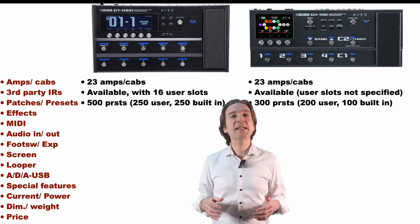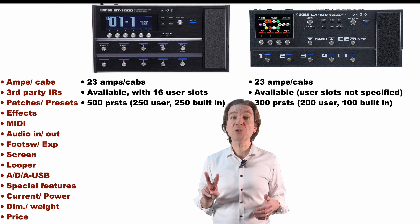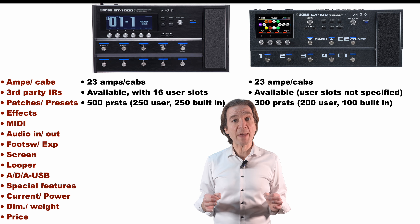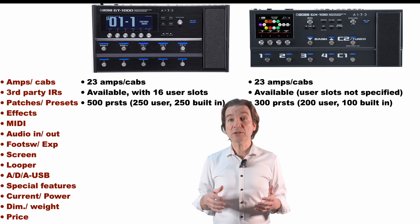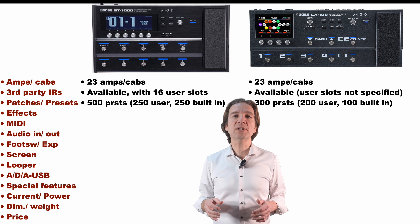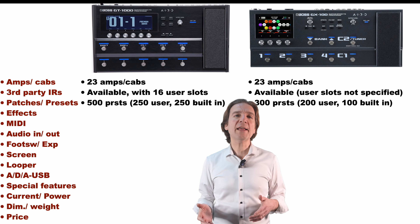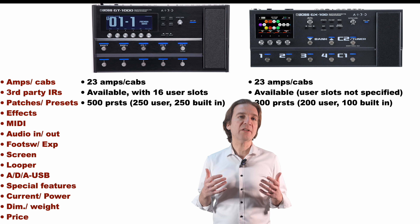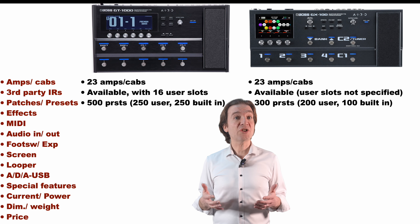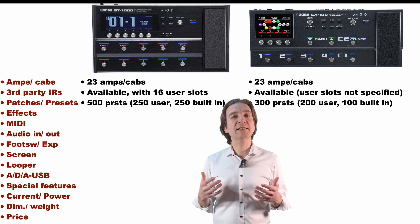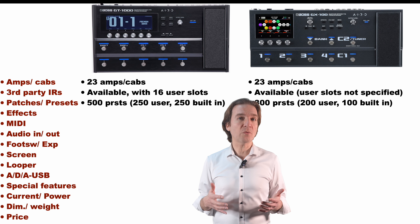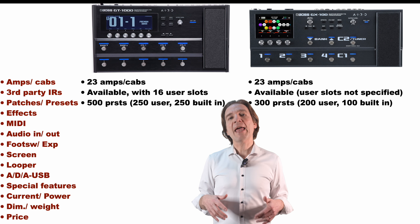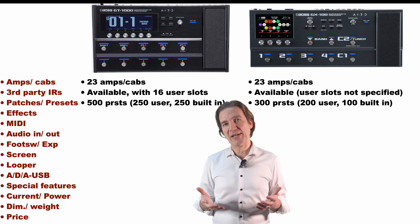Furthermore, the GT1000 has two sets of 50 banks each of 5 patches, with a total amount of 500 patches — 250 for the user and 250 built-in — while the GX100 offers 300 presets, with 200 available for the user and 100 with BOSS presets.